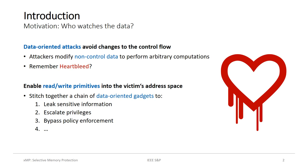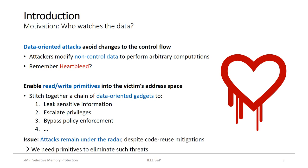Generally, to mount data-oriented attacks, attackers have used memory corruption vulnerabilities to gain read and write primitives into the victim's address space. They use chains of data-oriented gadgets, for example, to disclose sensitive information or escalate privileges without violating the application's control flow. In this way, data-oriented attacks can remain undetected despite code reuse mitigations. This is why, with our work, we emphasize the need for practical primitives that allow eliminating such threats.